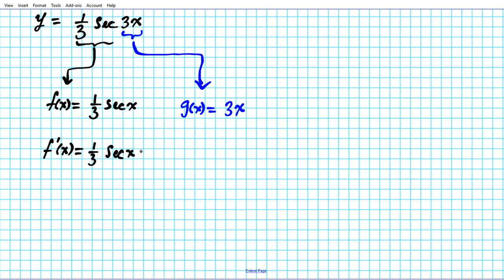And then let's go ahead and differentiate g. g prime of x, you can just use the power rule here, factor of 3 or the constant multiple rule, and your answer is going to be 3 since the derivative of x is just 1 and 3 times 1 is 3.